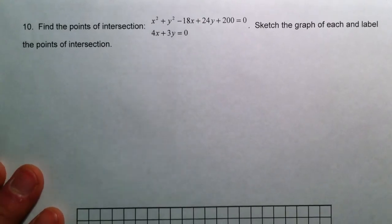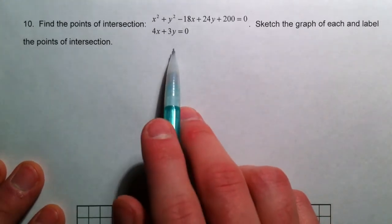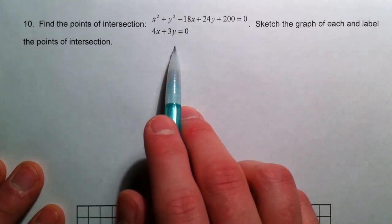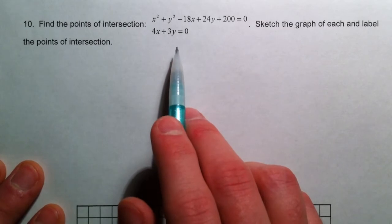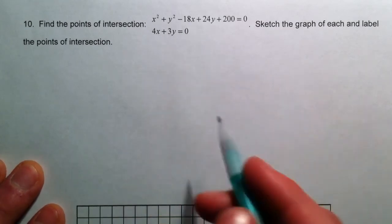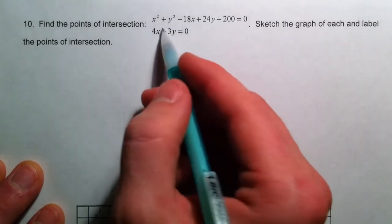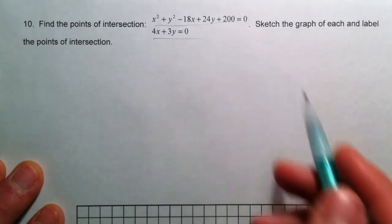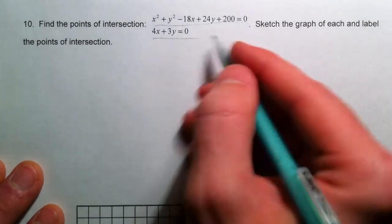Alright. Last kind of problem is finding the points of intersection. Two ways we can do it. We can use substitution or elimination. Either way is really ugly in this case. And I'll show you what I mean when we actually do it. So, first off, I'm going to just sketch a graph to see what it looks like. And then we'll do it by substitution.